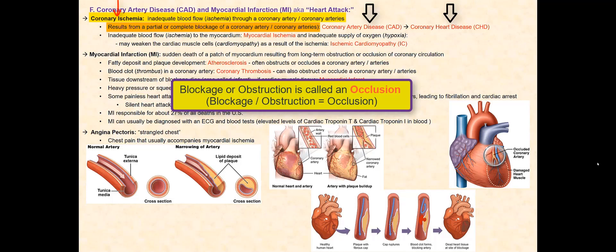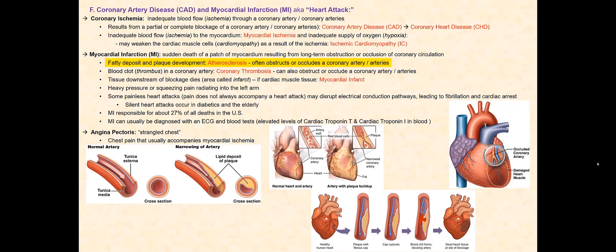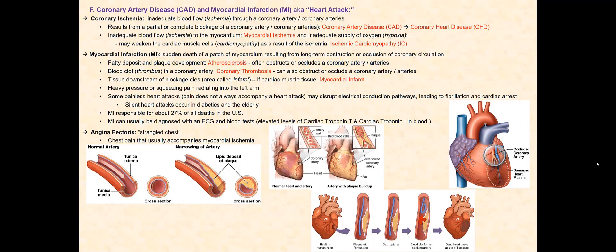A blockage or obstruction is called an occlusion. The occlusion of a coronary artery can be due to fatty deposits that form within the wall of the coronary artery. The fatty deposits and eventual plaque development is called atherosclerosis. As the plaque builds up, the wall of the blood vessel thickens, which narrows the opening within the artery and reduces blood flow to the tissue or organ. If this develops within one or more of the coronary blood vessels, we have coronary ischemia, which results in inadequate blood flow to the myocardium.